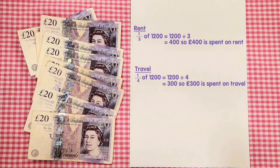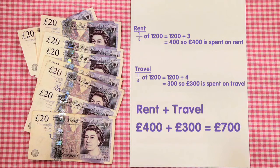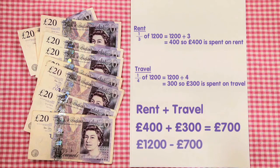We now need to find out the total that has been spent on rent and travel. £400 plus £300 is £700. Now you need to discover the money that's left over as a fraction of the original value. So £1,200 subtract £700 leaves us with £500.